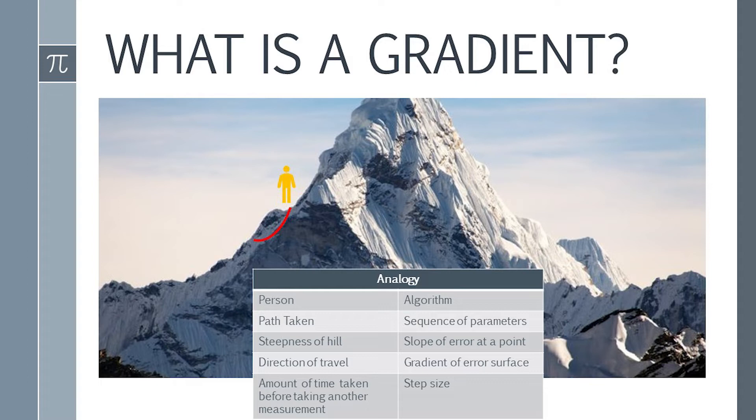The steepness of the hill represents the slope of the error surface at that point. The instrument used to measure the steepness is differentiation. The slope of the error surface can be calculated by taking the derivative of the squared error function at that point. The direction they choose to travel in aligns with the gradient of the error surface at that point.